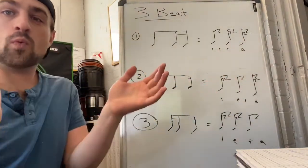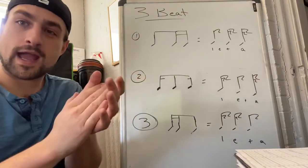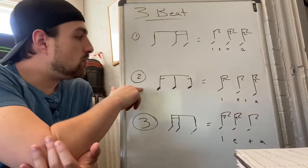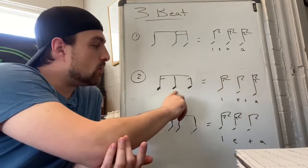So it'll sound like this: one e and. Perfect. For number two, we have the eighth note in the middle.